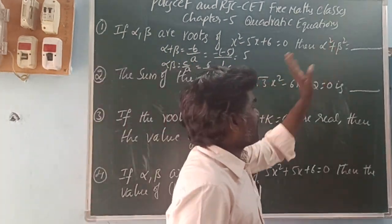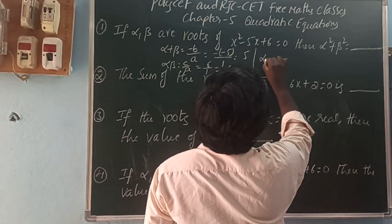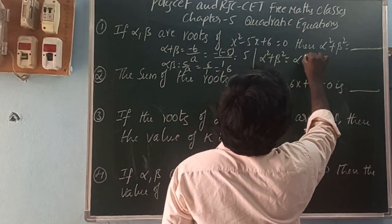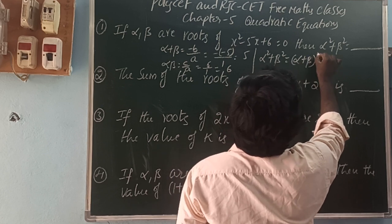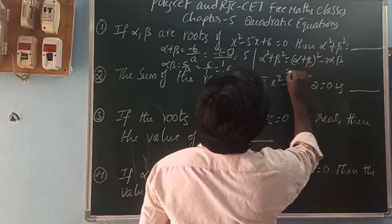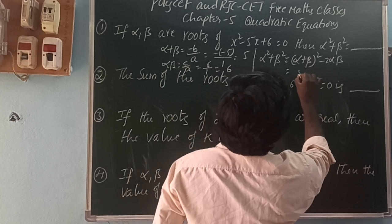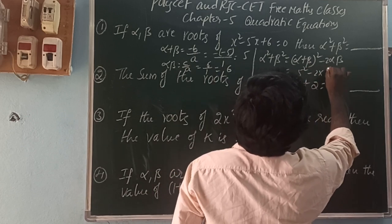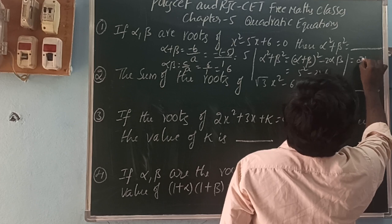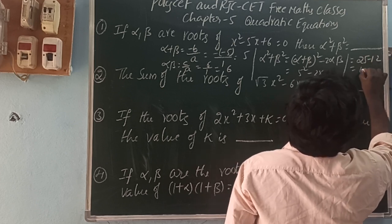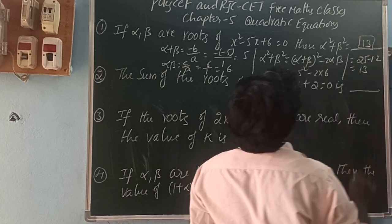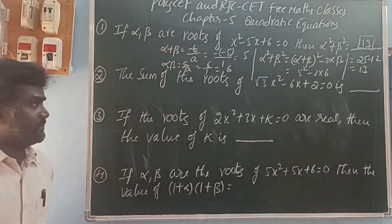So then alpha² + beta². You can write alpha² + beta² as (alpha + beta)² - 2·alpha·beta. So (alpha + beta)² is 5² minus 2 × 6. That is 25 minus 12. 25 minus 12 is 13. So the value of alpha² + beta² is 13.